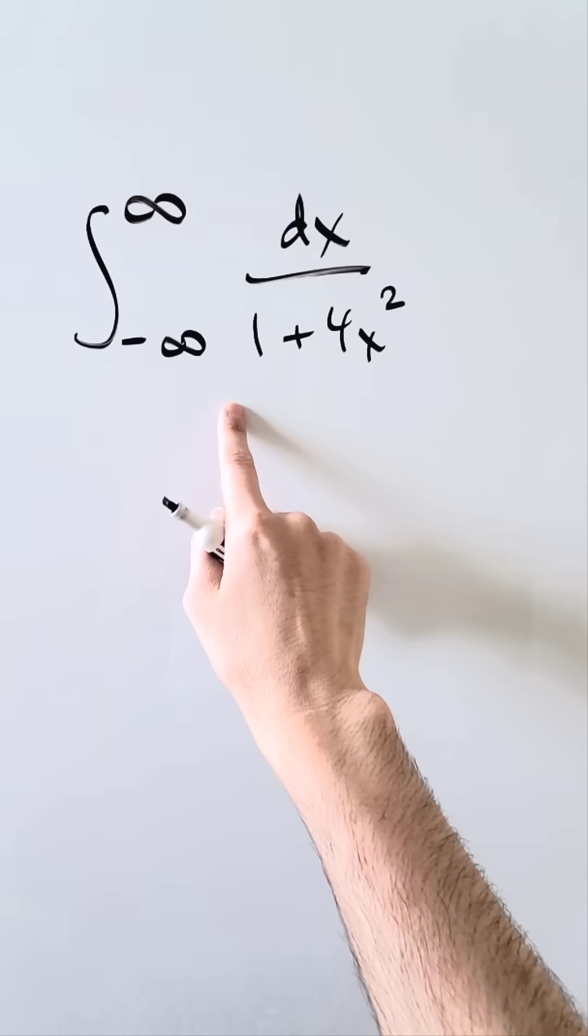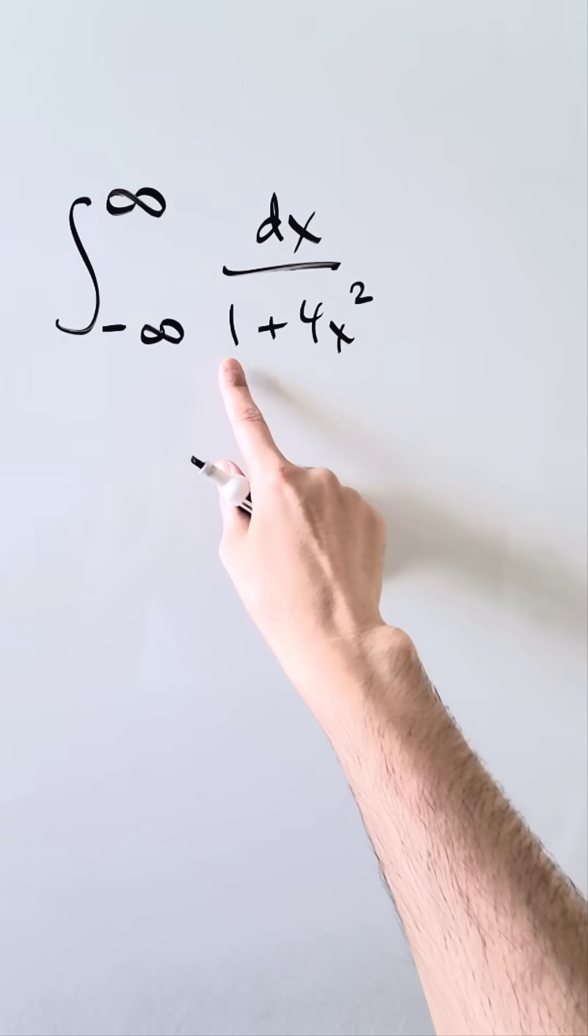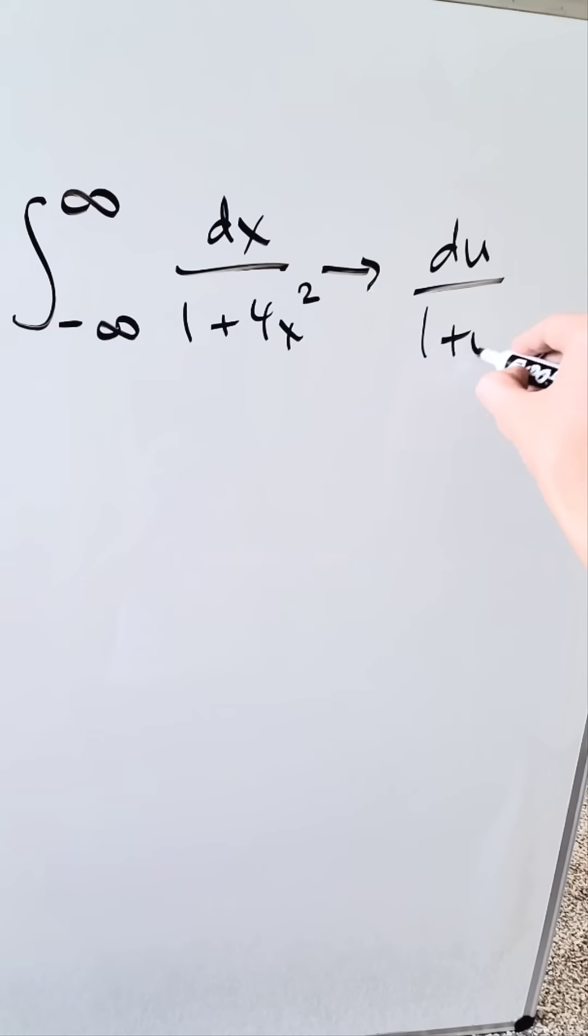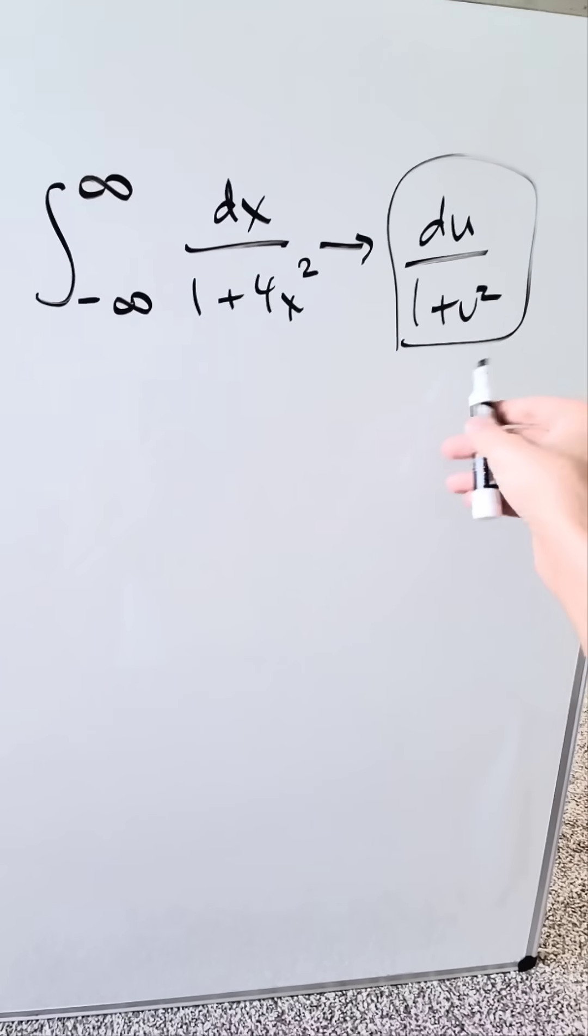Let's have fun here with this integral: minus infinity to infinity dx over 1 plus 4x squared. Anytime you're looking at something like this in the denominator, your goal should be to convert into du over 1 plus u squared because this will bring out an arctan anti-derivative which is very easy to handle.